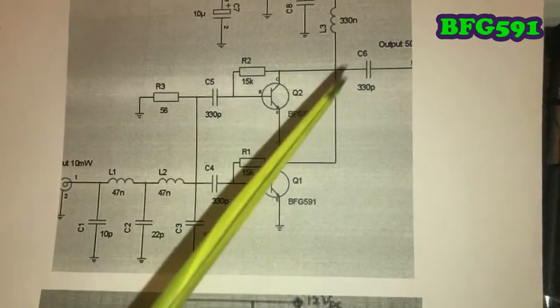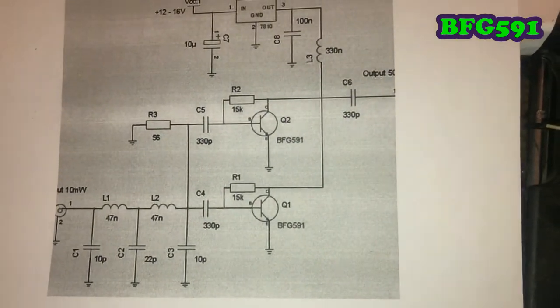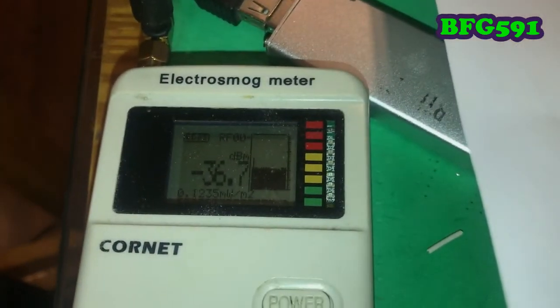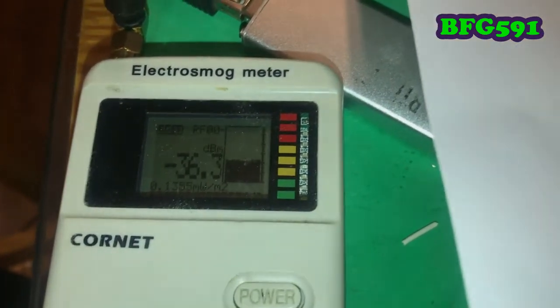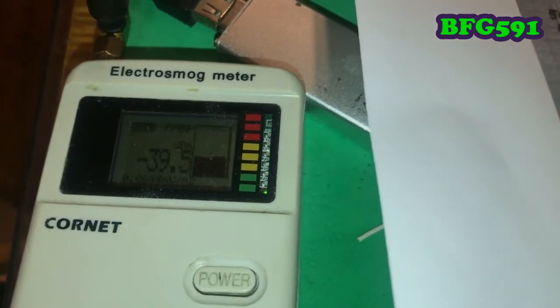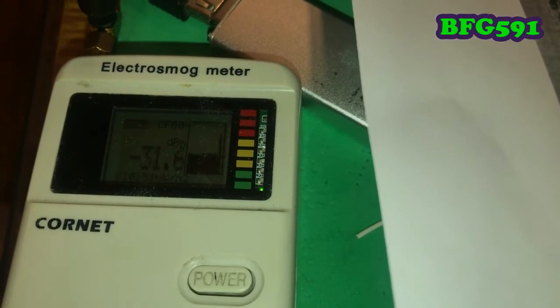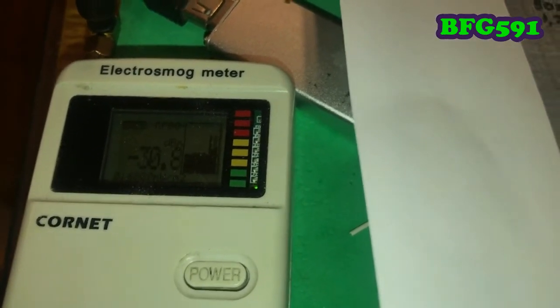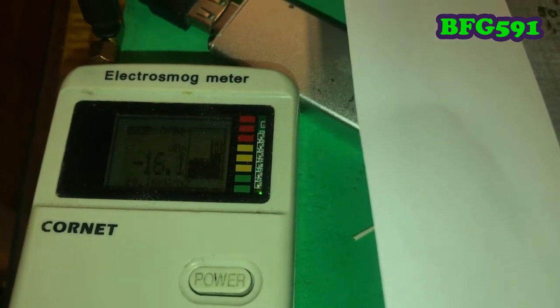Also I have an electrosmog meter from Cornet. It's a pretty nice device. As you can see, I'm turning off the amplifier and it's going down to minus 18, minus 16.